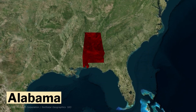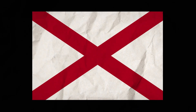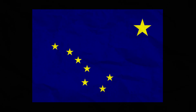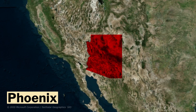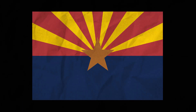Number 1, Alabama. Its capital is Montgomery. This is the flag of Alabama. Number 2, Alaska. Its capital is Juneau. This is the flag of Alaska. Number 3, Arizona. Its capital is Phoenix. This is the flag of Arizona.